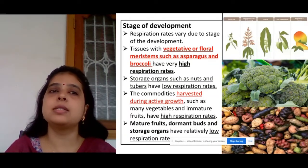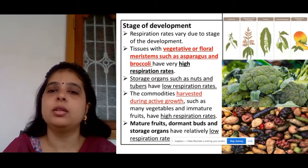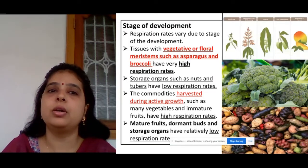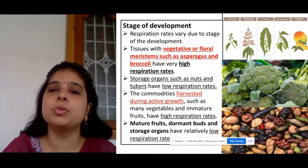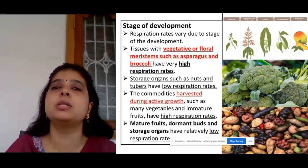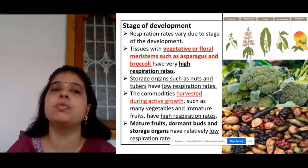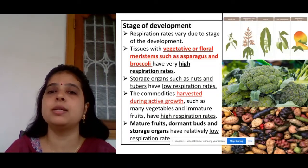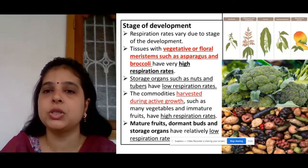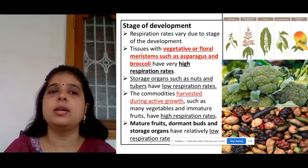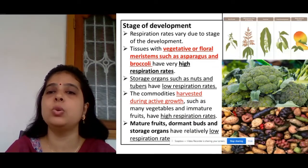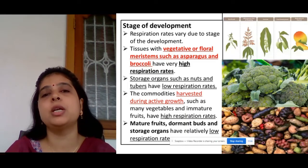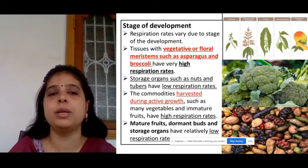The next factor is the stage of development and type of commodity. There are various types of plant parts — vegetative, floral, or storage organs — that we consume in daily life. Vegetative or floral materials, for example asparagus and broccoli, exhibit a high respiration rate, so their shelf life is less. In contrast, tuber and nut crops have a very low respiration rate, so you can store them for a longer period — for example, potatoes.